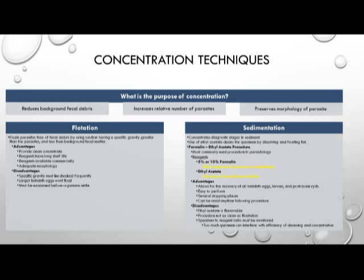The purpose of a concentration procedure is to reduce the background of fecal debris, increase the relative number of parasites, and preserve the morphology of the parasite. The two types of concentration procedures are: first, the flotation procedure, which floats parasites free of fecal debris using a solution with a specific gravity greater than the parasite and less than the fecal matter. The advantages are that it provides a clean concentrate, reagents have a long shelf life, and it provides adequate morphology. Disadvantages include that specific gravity must be checked frequently, larger helminth eggs often won't float, and the sample must be examined before the organism settles.